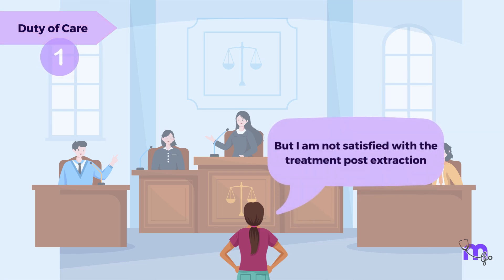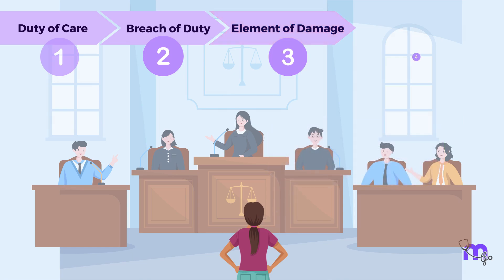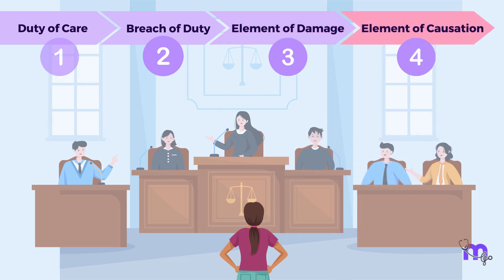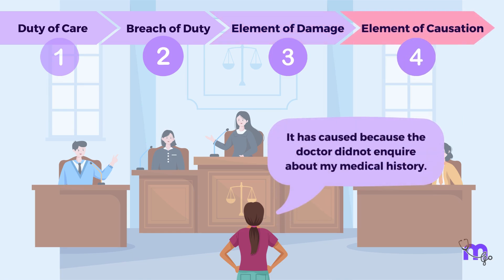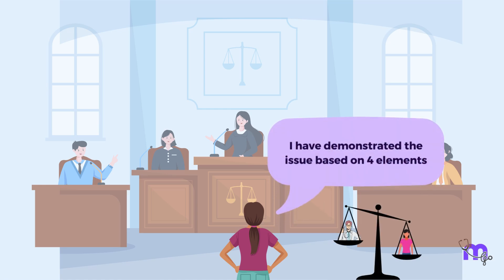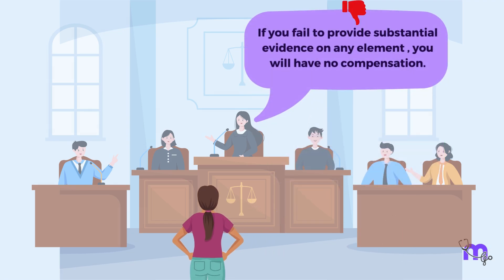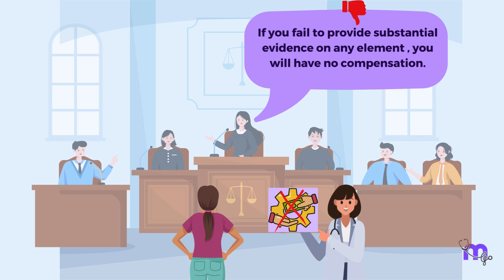When the doctor fails to provide the care as promised, it is considered a breach of duty. Due to this breach, the patient should be able to prove the harm they suffered — this is the element of damage. Lastly, we have the element of causation, which refers to the link between the breach of duty and the harm suffered by the patient as its result. To succeed in a negligence lawsuit, the consumer must demonstrate to the court each of the four elements. Failure to provide substantive evidence on any one element may result in no compensation.